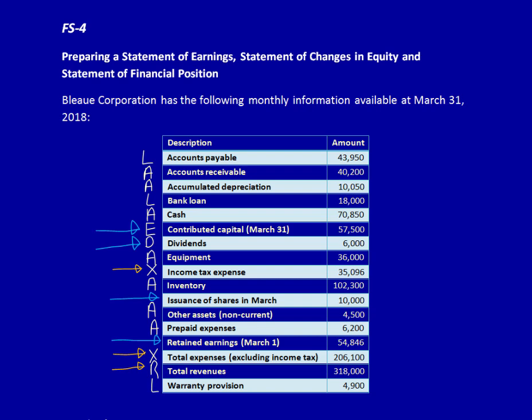We already have all the asset and liability accounts denoted. What we have to do for the assets and liabilities is indicate if they are current or non-current. Current assets will be used or consumed in the upcoming 12-month period or operating cycle, whichever is longer. Non-current assets will be used or consumed beyond that point. Current liabilities are the liabilities that will be settled within the upcoming 12 months or operating cycle, whichever is longer. Non-current liabilities will be settled beyond that 12-month or operating cycle period.